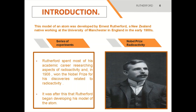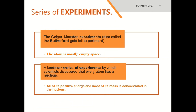Through a series of experiments, he tried to prove that the atom is mostly empty space, and that all of its positive charge and most of its mass is concentrated in the nucleus. Rutherford performed the Gold Foil Experiment to understand how negative and positive charges could coexist in an atom. He bombarded alpha particles on a 0.0004 cm thick gold foil.